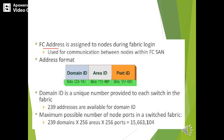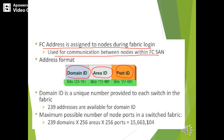The FC address is assigned to nodes during fabric login and used for communication between nodes within the FC SAN. The address format consists of domain ID, area ID, and port ID. The domain ID is a unique number provided to each switch in the fabric. Out of 256 possible domain IDs, only 239 can be used; the other 17 are reserved. The maximum possible number of node ports in a switched fabric is 239 × 256 × 256.